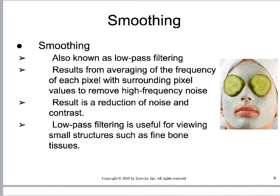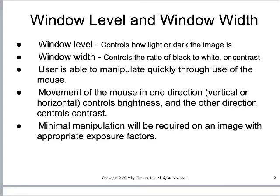Edge enhancement increases contrast at the same time it increases noise. Smoothing reduces contrast and reduces noise. I have a great example — a picture of my dog Honeybun that I edge enhanced over and over again. You can look up edge enhancement tools online and edge enhance a picture of your friends over and over — you'll start to see the noise come out and the edges will be there more clearly.